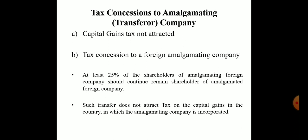The second concession is for the foreign amalgamating company. As per Section 47 subsection 6A of the Income Tax Act 1961, where a company holds shares of an Indian company and transfers those shares in a scheme of amalgamation to another foreign company, such transaction will not be regarded as a transfer for the purpose of capital gain under Section 45. Two conditions must be satisfied: at least 25% of the shareholders of the amalgamating foreign company must remain shareholders of the amalgamated foreign company, and such transfer must not attract tax on capital gain in the country in which the amalgamating company is incorporated.